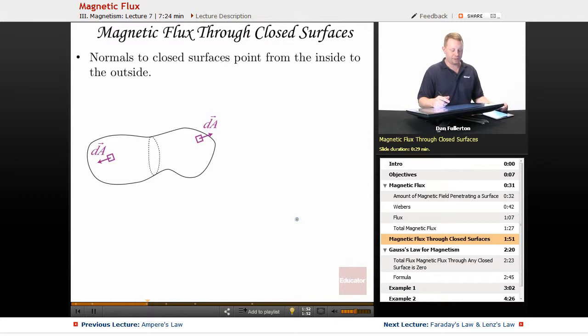When we talk about magnetic flux through closed surfaces, again normals still point from the inside to the outside, so now our total magnetic flux would be the integral of d phi B, which is the integral over the closed surface of B dot dA, which for magnetic flux is going to equal zero. Let's talk about that.